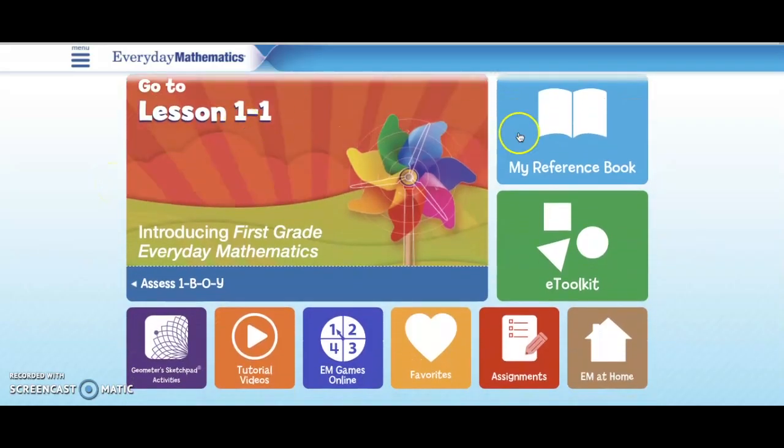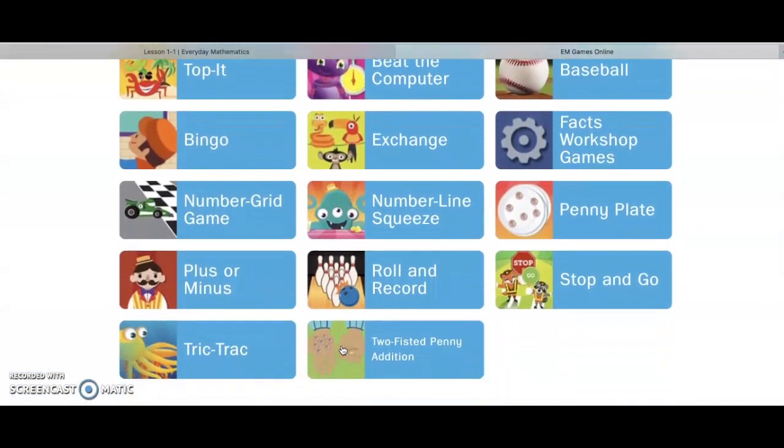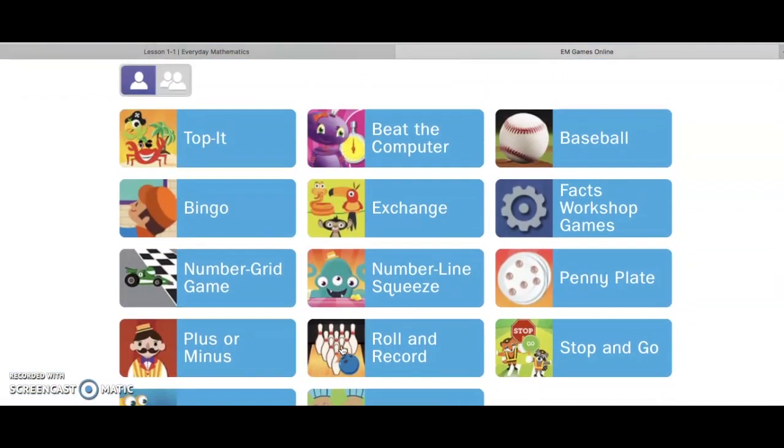Once I enter the ConnectED program, I want to look for the games icon. It's the purple shape that has the spinner on it. When I click on that, all of the many games that we have in ConnectED will come up.